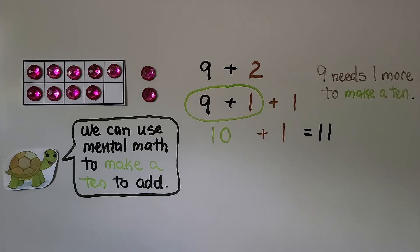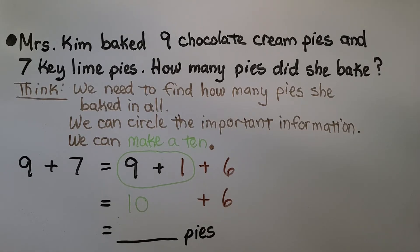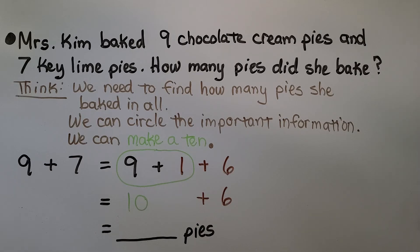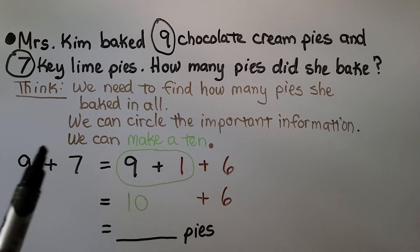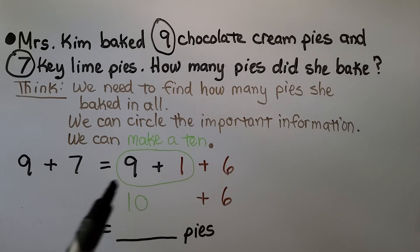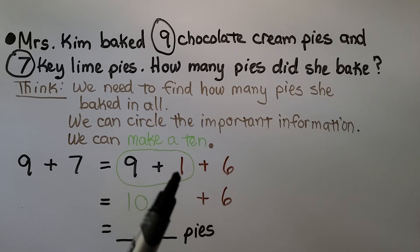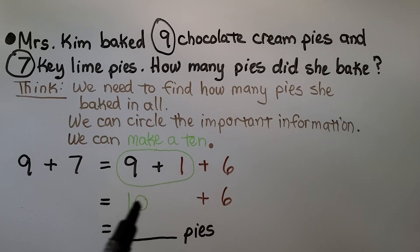We can use mental math to make a 10 to add. Mrs. Kim baked 9 chocolate cream pies and 7 key lime pies. How many pies did she bake? We need to find how many pies she baked in all. We can circle the important information: 9 and 7 are important. We have 9 plus 7. 9 needs 1 more to be a 10, so we break the 7 into a 1 plus 6. We give the 1 to the 9 to make 10. Now we have 10 plus 6. If you said 16, you're right.